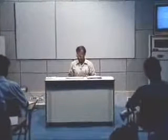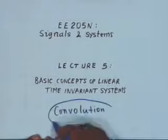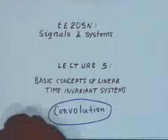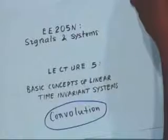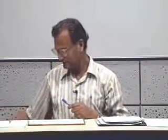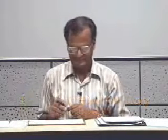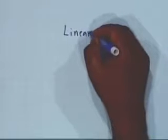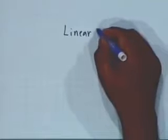This is the fifth lecture on signals and systems, and the topic is basic concepts of linear time-invariant systems. In the process, we shall introduce the term convolution, which is one of the most important processes in the analysis of signals and systems. Before we come to the topic proper, I would like to recall what we did at the end of the last class — we had introduced what are known as linear and nonlinear systems.